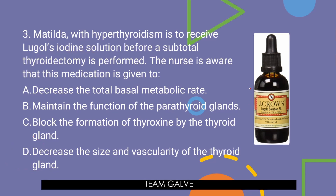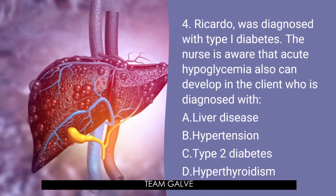Question 4: Ricardo was diagnosed with Type 1 diabetes. The nurse is aware that acute hypoglycemia can also develop in a client diagnosed with — A. Liver disease. B. Hypertension. C. Type 2 diabetes. D. Hyperthyroidism. — The answer is A, Liver disease. The client with liver disease has a decreased ability to metabolize carbohydrates because of a decreased ability to form glycogen and to form glucose from glycogen. Hence, the answer is letter A.